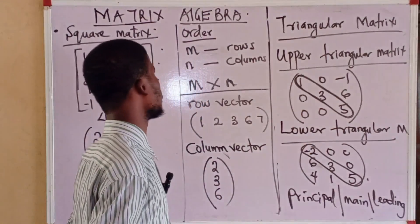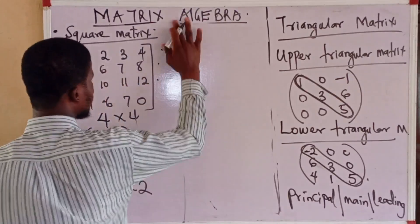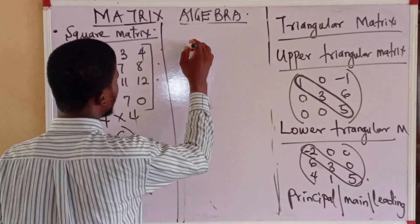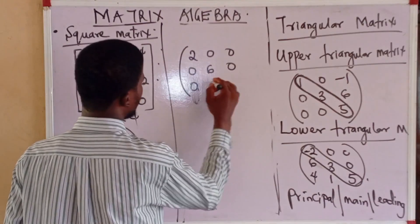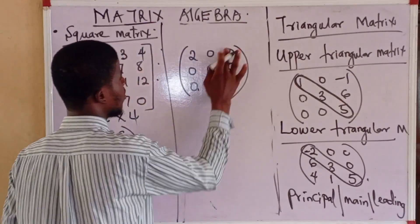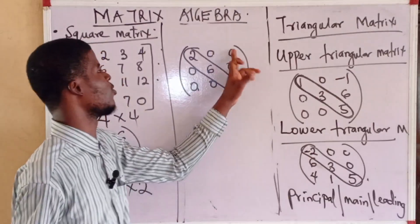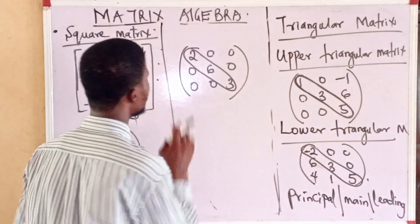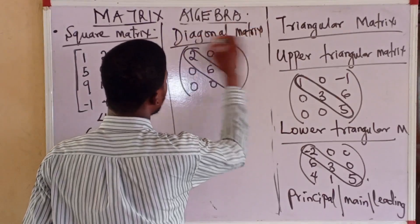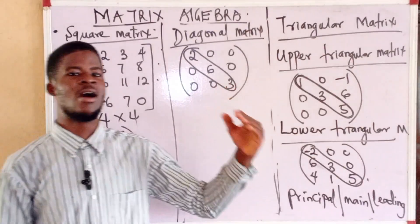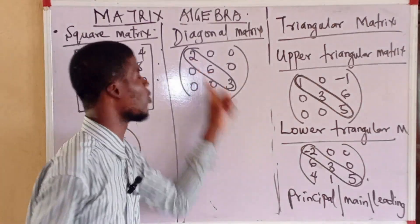Now let us see a special case of the triangular matrix. We can have a matrix like 2, 0, 0, 0, 0, 0, 0, 0, 3. In this case, the matrix is both upper and lower triangular — all numbers above the principal diagonal are 0, and all numbers below it are also 0. This type of matrix is called a diagonal matrix. In a diagonal matrix, all elements above and below the principal diagonal are 0; the only non-zero numbers are along the principal diagonal.